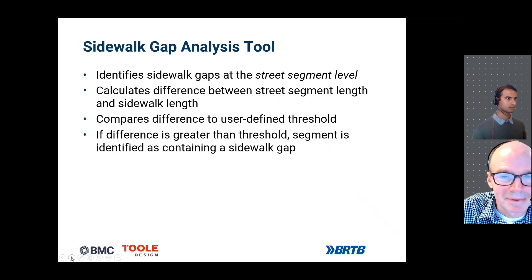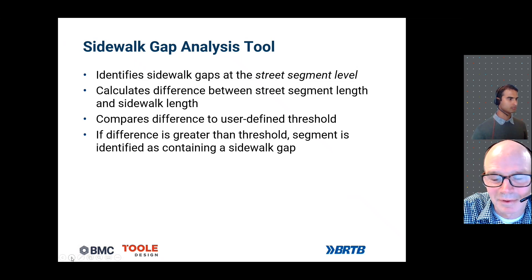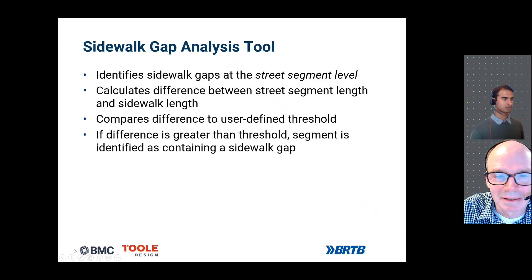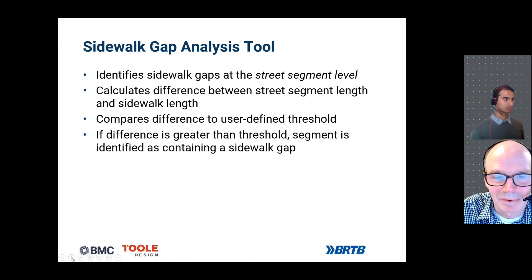The Sidewalk Gap Analysis Tool identifies sidewalk gaps at the street segment level. It doesn't show the actual gaps, but rather segments along which gaps have been identified. It does this by calculating the difference between the street segment length and the sidewalk length, comparing it to a user-defined threshold. If the difference is greater than the threshold, the segment is identified as containing a sidewalk gap.